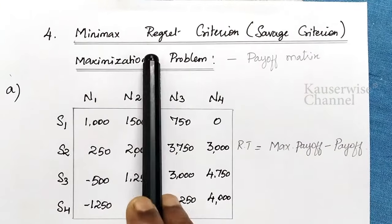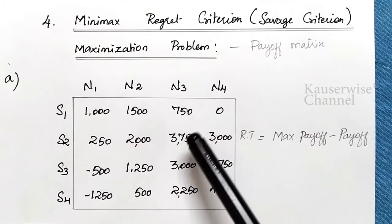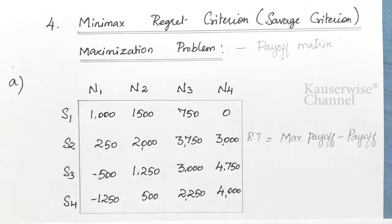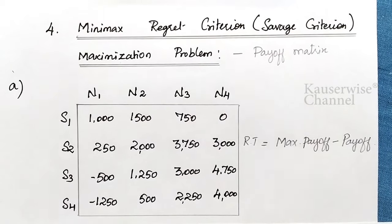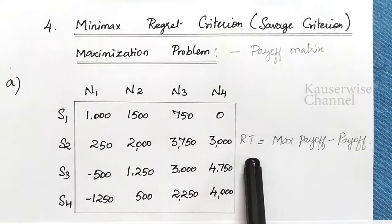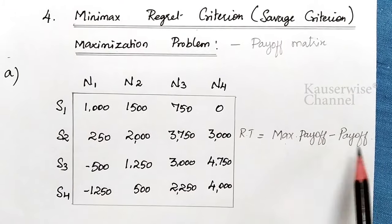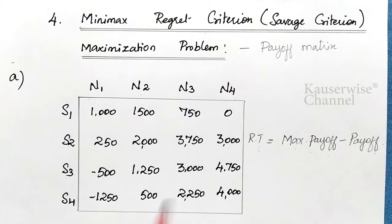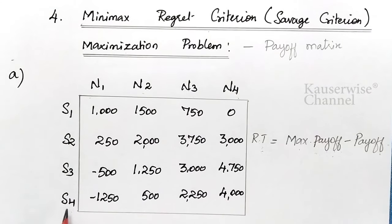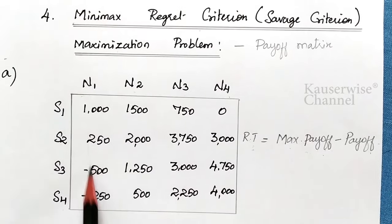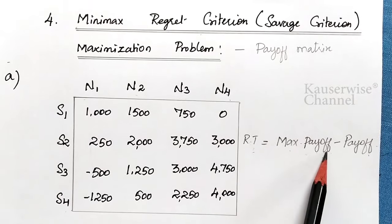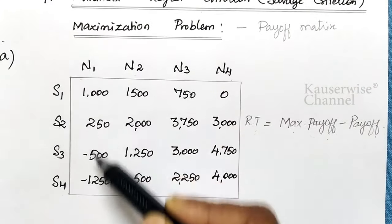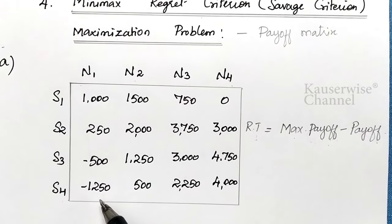For Minimax regret criterion, we are first going to see the maximization problem. Assume this is a payoff matrix — payoff matrix is applicable for maximization problems. These are the four alternatives S1, S2, S3, S4, and these are the four events N1, N2, N3, N4. According to this criterion, first we need to construct the regret table. The formula is maximum payoff minus payoff, applied column-wise for each event.